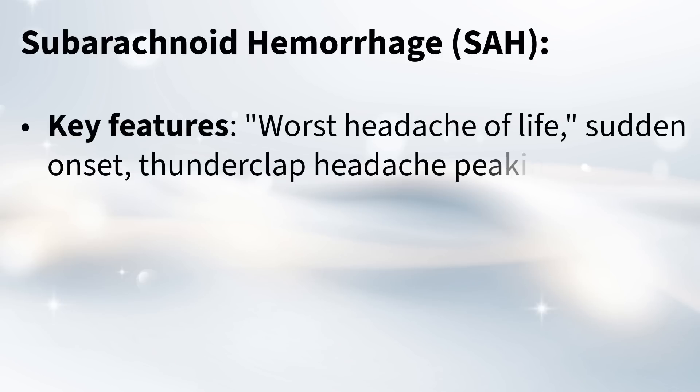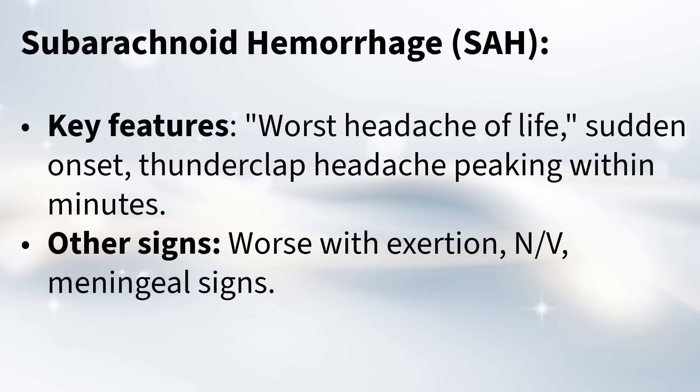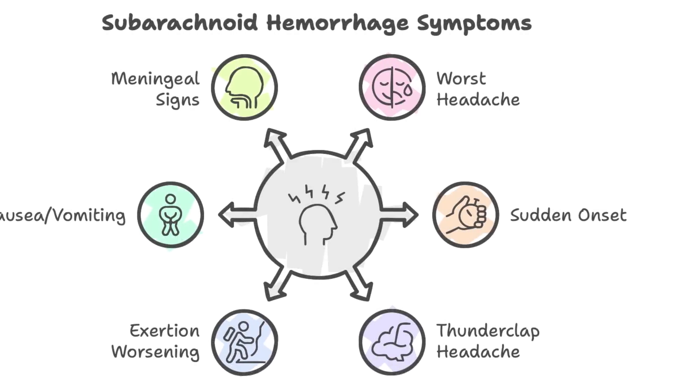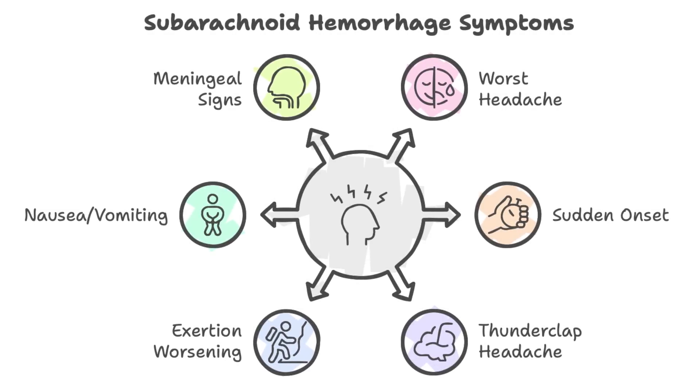The guide says people often describe it as the worst headache of their life, and it comes on really suddenly — they call it a thunderclap headache. It reaches its peak intensity in just a few minutes; it's not one that gradually builds up, it just hits you. So the main thing is: any sudden, super intense pain that's different from your usual headaches — that's when you need to worry.